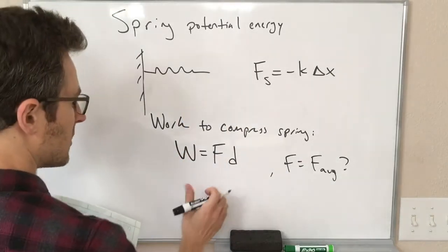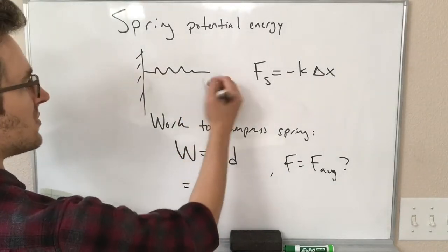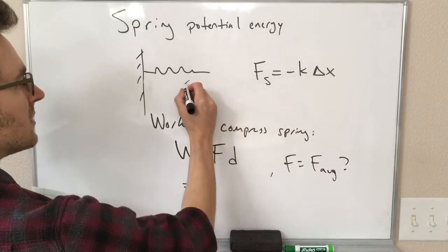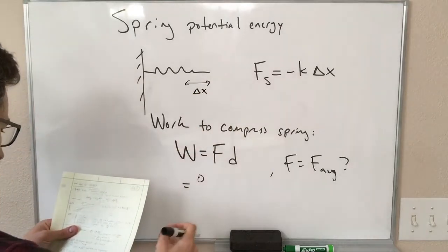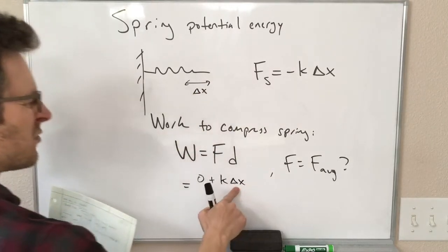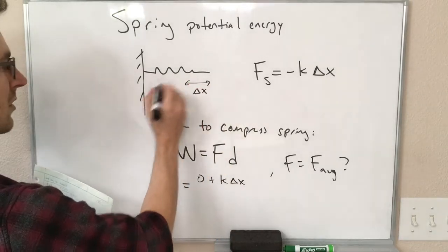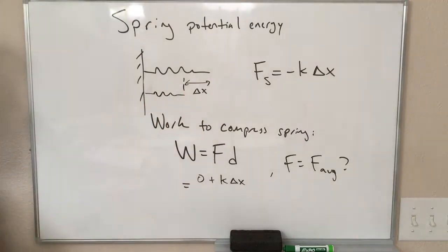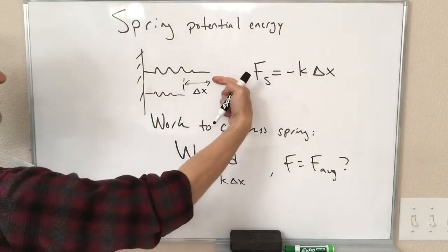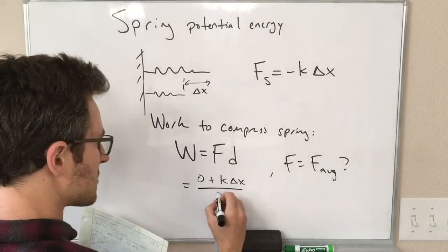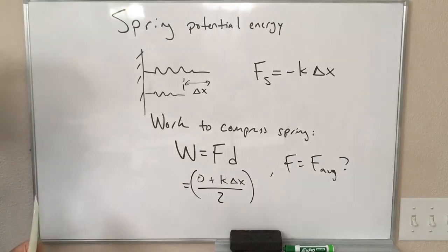Well, the average force as we compress this spring, over here on one side is zero, right when we start to compress the spring it's zero. When we have fully compressed it a distance delta x, our force is k times this full delta x compression. So here the force is zero, here the force is k times delta x, and so the average force is just those divided by two, which is one half k times delta x.